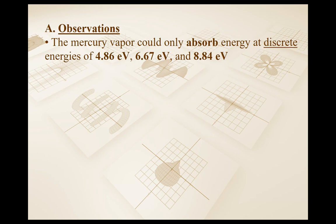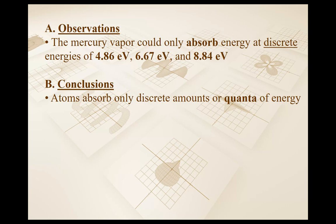The atoms that make up the mercury are being very picky — they're only absorbing very discrete amounts, or quanta, of energy. Remember, we talked about quantization. Quantization means numbers can't come in any random values — like charge on an object must be a whole number multiple of the elementary charge, and photon energy must be a whole number multiple of the energy in one photon. So here, only certain quanta of energy are being absorbed.